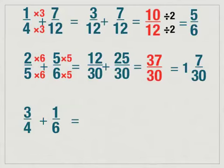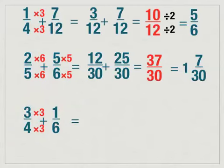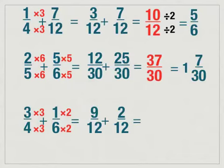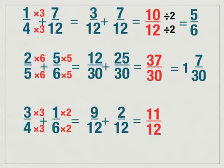What do we do to four to get twelve? The answer would be multiply by three. Whatever we do to the bottom, we have to do to the top. What do you do to six to get twelve? Multiply by two. Whatever you do to the bottom, you have to do to the top. When you do three times three, you get nine over twelve, plus one times two is two, over six times two is twelve. Now that we have a common denominator, I can leave the denominator alone and add the numerators. So nine plus two is eleven, and your denominator is twelve. This cannot be simplified or changed into a mixed number, so eleven-twelfths is our final answer.